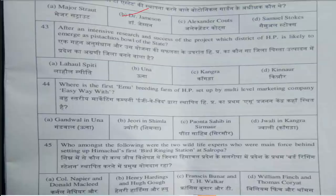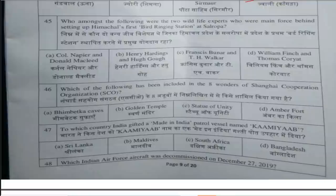Forty-fourth question is: Where is the first mushroom breeding farm of HP set up by multilevel marketing company Easyway? Answer is option D, Jawali in Kangra. Forty-fifth question: Who among the following were the two wildlife experts who were the main force behind setting up Himachal's first bird drinking station at Alpuropa? Answer is option C, Francis Bunner and D.H. Walker.